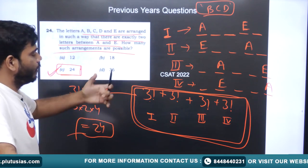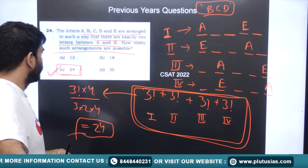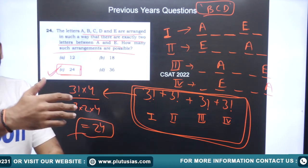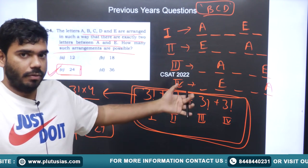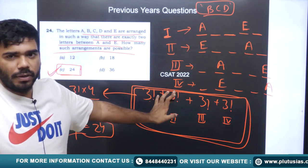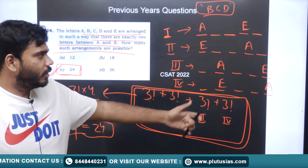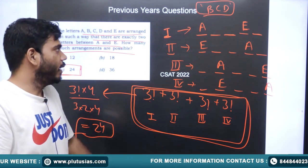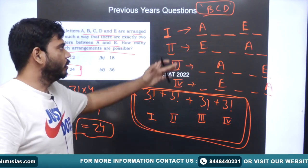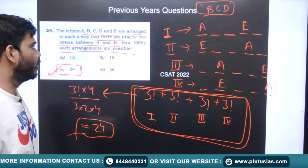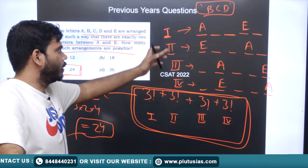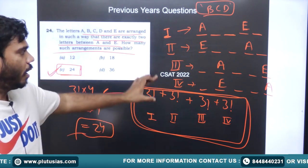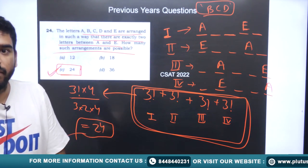So we have solved in detail three previous year questions. This topic is not very complicated — you just need to remember how to use factorials, how to apply permutation and combination to find total arrangements, and how to incorporate given conditions. The conditions can vary question to question, but the approach remains the same. Thank you.